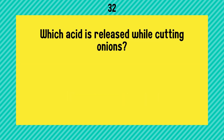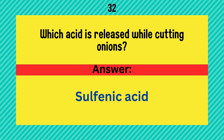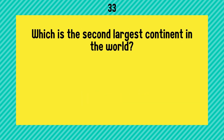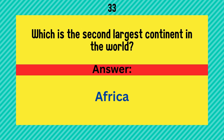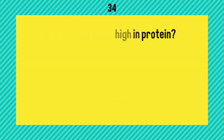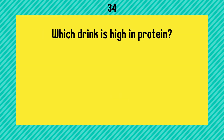Which acid is released while cutting onions? Answer is sulfenic acid. Which is the second largest continent in the world? It is Africa. Which drink is high in protein?